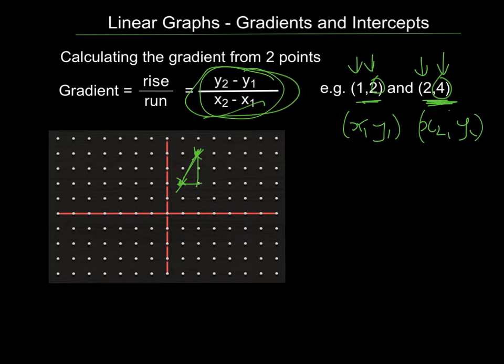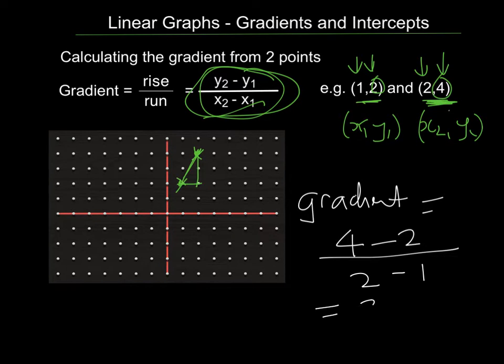So I just need to substitute those values in. So gradient equals 4 minus 2, that's this 4 here and this 2 here, the 2 y values. And I'm subtracting the second one take away the first one. And then the 2 x values, 2 minus 1. That gives me 2 over 1, which is 2. So the gradient of that graph is 2. And just to see that you can check it from the actual picture that I drew, without the equation, it goes up 2 and across 1. That would be 2 for the rise, 1 for the run, 2 over 1 is 2. The same answer. So you don't actually need to draw the graph. You can just use this rule here to calculate the gradient.